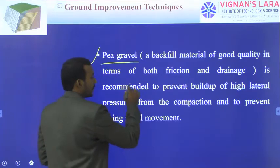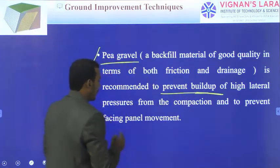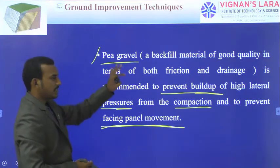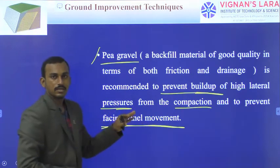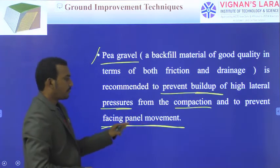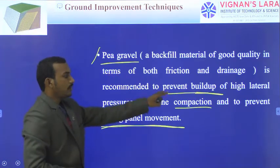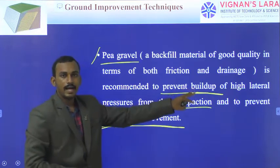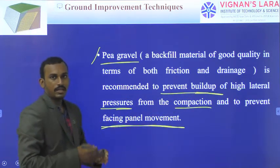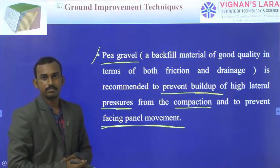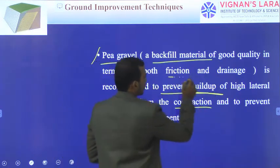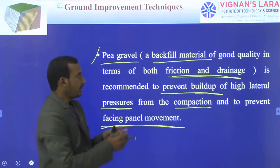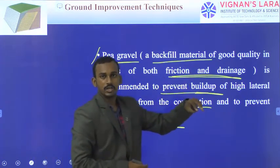Pea gravel is generally recommended to prevent buildup of high lateral pressures from compaction and to prevent water buildup. The backfill material should have good friction and drainage properties — it is a backfill material having good friction and good drainage. That is why we mostly choose cohesionless soils. In cohesionless soils, even if there is water, it easily escapes through the cohesionless soil.